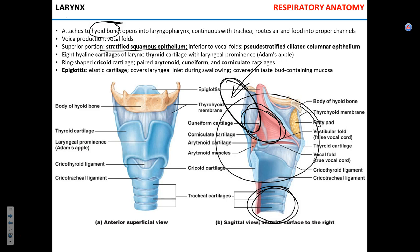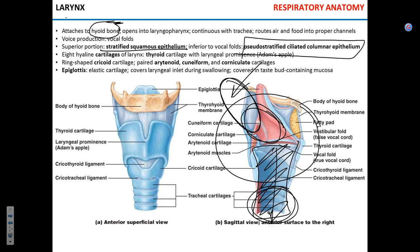Below the vocal cords, this part of the larynx is lined with pseudostratified columnar epithelium, because that is the part that only gets in contact normally with air.